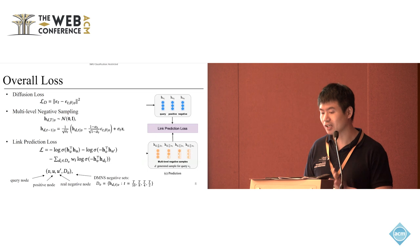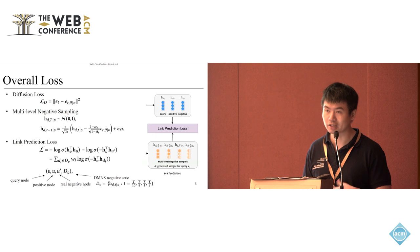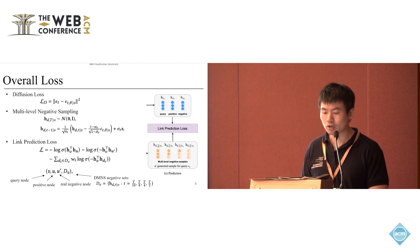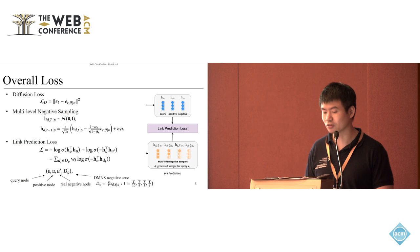We have a query node, let's say v, then u is a positive node. The goal is to make v and u as similar as possible, but at the same time we want to make v different from the negative nodes. For the negative nodes, we have two kinds: one is real negative nodes—those nodes that are actually sampled from the graph—but we also supplement it with our multi-level negative nodes. In this multi-level, we generate the embeddings from the diffusion model and we set t, the time step, to different values.